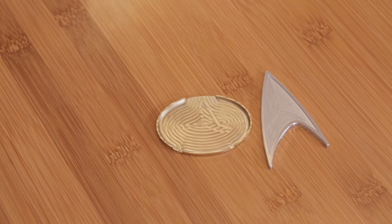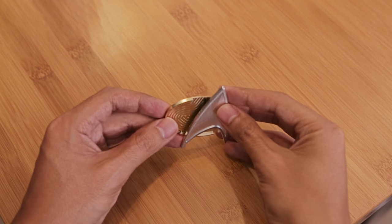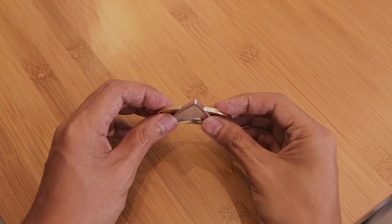So here are the two parts looking nice and shiny. A quick test fit shows how the triangle can be inserted into the cutout on the base.